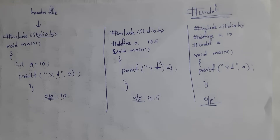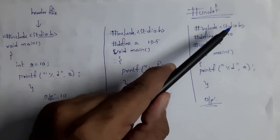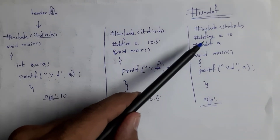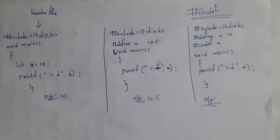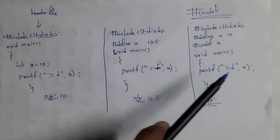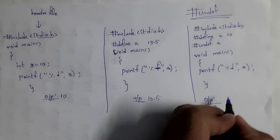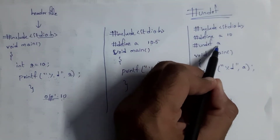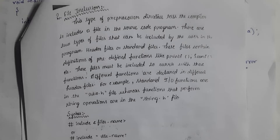The next directive is #undef, which stands for undefined. If you want to remove a macro that you have defined, you use the #undef directive. For example, after writing #define A 10, if we write #undef A, the macro A is removed. Then inside void main, if we write printf("%d", A), we will get an error — because the macro was removed and no longer exists.